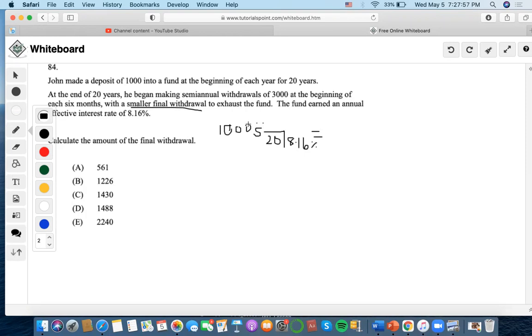So what we're going to do first is that we're going to calculate this amount of fund. So I'm going to convert this to an immediate by multiplying it by 1.0816, the effective.